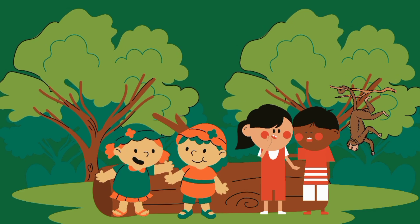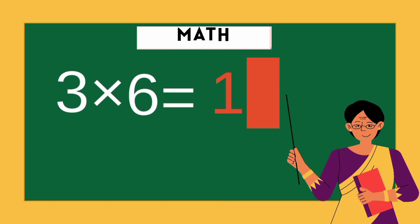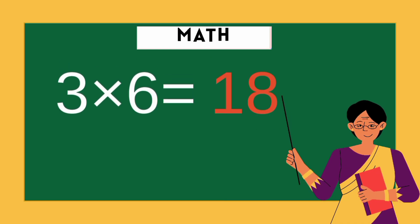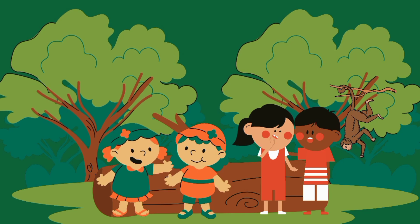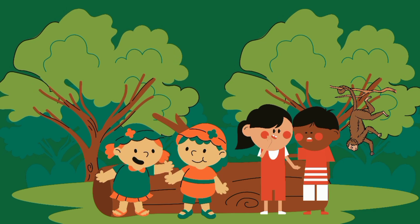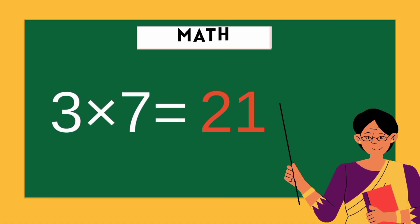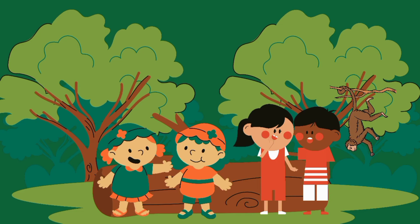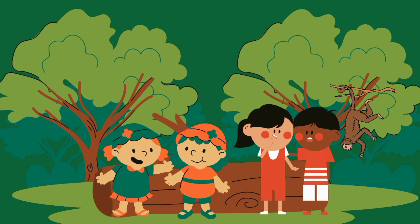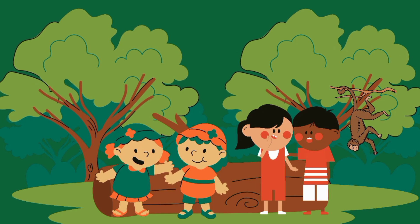3 5s are 15. 3 6s are 18, 3 6s are 18. 3 7s are 21, 3 7s are 21.